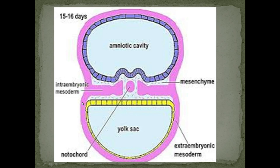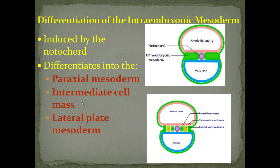The intra-embryonic mesoderm differentiates into three types, induced by the notochord: paraxial mesoderm, intermediate cell mass, and lateral plate mesoderm — which merges with the extra-embryonic mesoderm. Immediately adjacent to the notochord is the paraxial mesoderm, then the intermediate cell mass, and then the lateral plate mesoderm which merges with the extra-embryonic mesoderm.